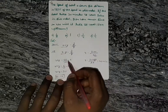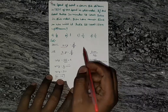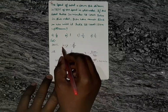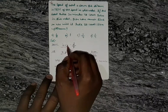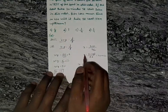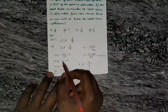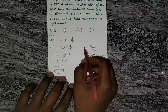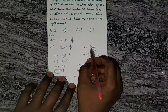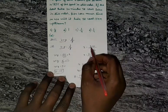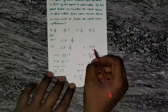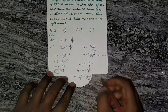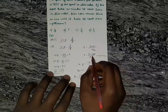x plus y equals 125 percent of the speed in still water. Here x is the speed of the boat in still water and y is the speed of the stream. So x plus y equals 5 by 4 into x. The boat covers 20 kilometers in 30 minutes, which is half an hour.